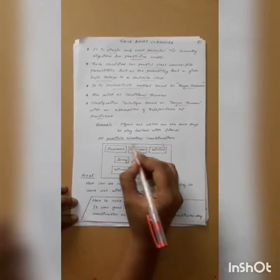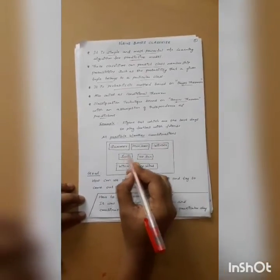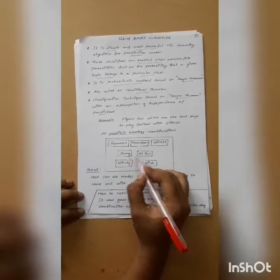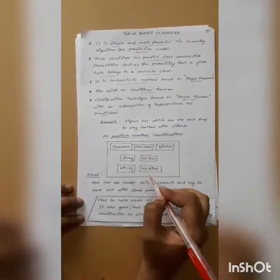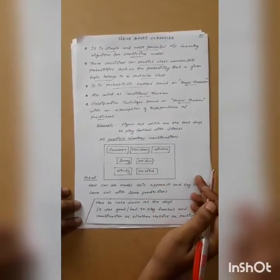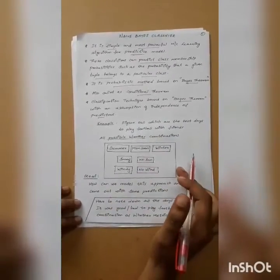All the possible weather combinations given here are summer, monsoon, winter, sunny, no sun, windy, and no wind. The main goal is to model this approach and try to come out with some predictions.